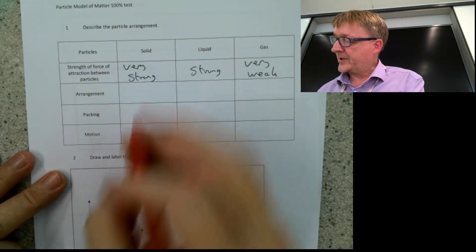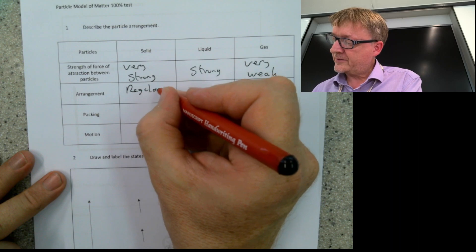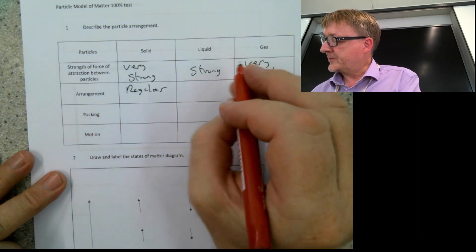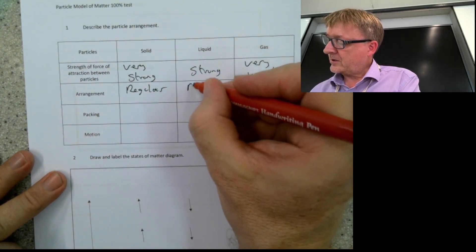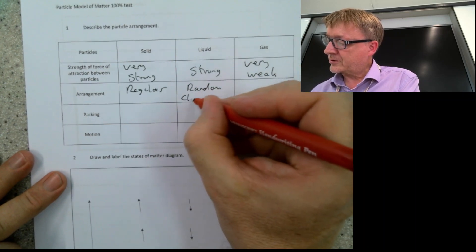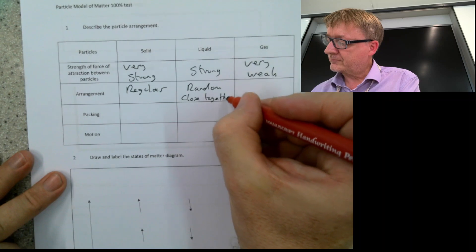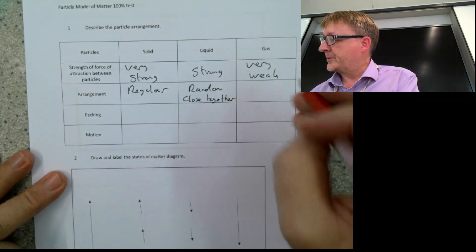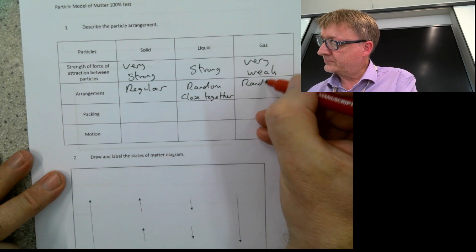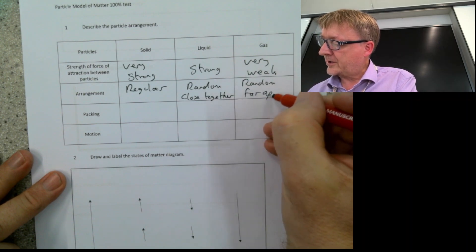The arrangement of particles in a solid is regular — they're in nice lines. The arrangement of particles in a liquid is random but close together. The arrangement in a gas is random and far apart.